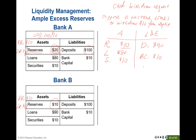Does Bank A meet the Federal Reserve requirement after the withdrawal? The required reserve is 10% of deposits, so 10% of $90 equals $9. Bank A has $10 in reserve, which exceeds the $9 requirement, so Bank A still meets the Federal Reserve's reserve requirement.